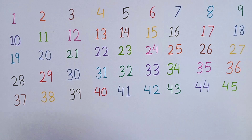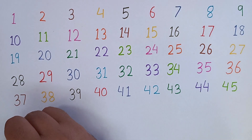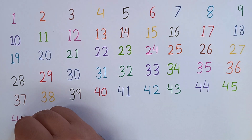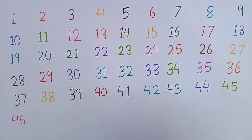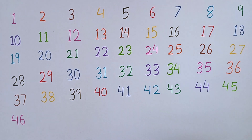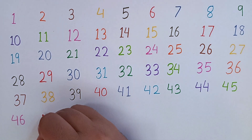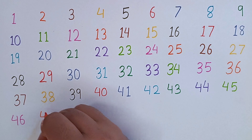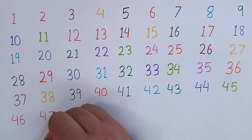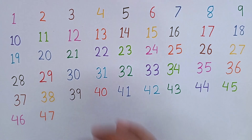37, 38, 39, 40, 41, 42, 43, 44, 45. After 45, I am writing 46. This is 46. 4, 6 — 46. After 46, the next number will be 47. 4, 7 — 47. Remember: 46, 47, 48.